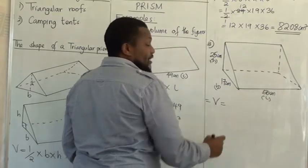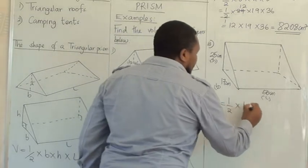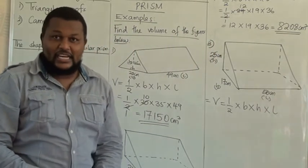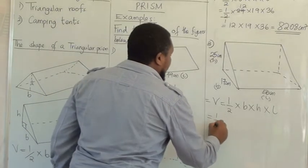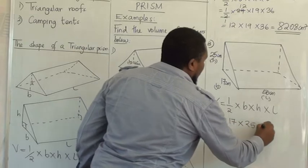Our formula is, state with me, a half times base times height times length. Is that what you stated, dear learner? Good.